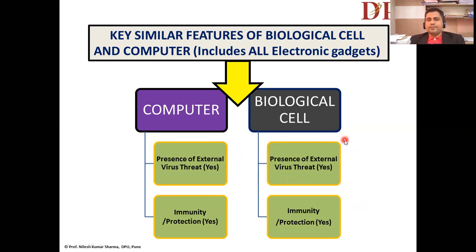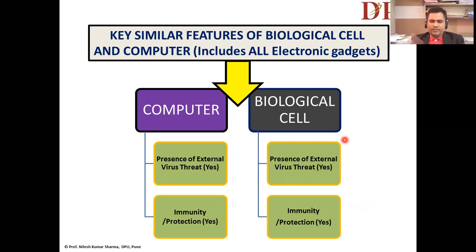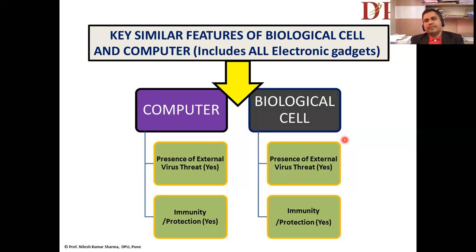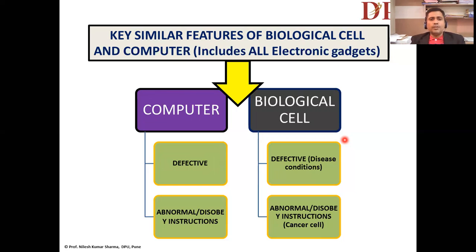Computers are under threat from external viruses — computer viruses — and biological cells are also under threat from external viruses like coronaviruses and many others. Computers have their own protection system like antivirus software, and biological cells have their own inbuilt immune system — sometimes referred to as innate or adaptive immunity. This is another very interesting comparison between the two units.